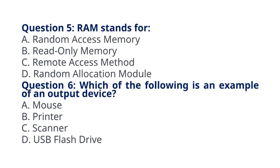Question 5: RAM stands for — A. Random access memory, B. Read-only memory, C. Remote access method, D. Random allocation module. The correct answer to question 5 is option A: Random access memory. Explanation: RAM (Random access memory) is a type of computer memory that allows data to be accessed randomly.